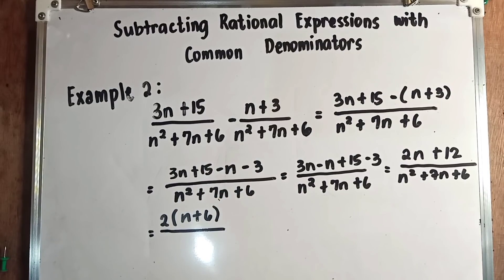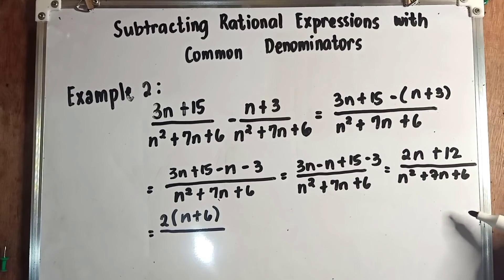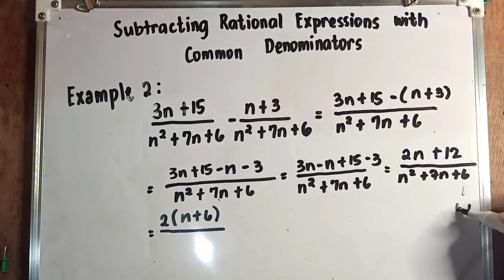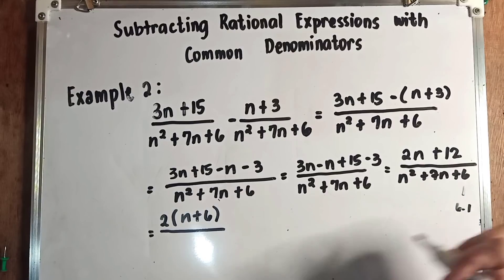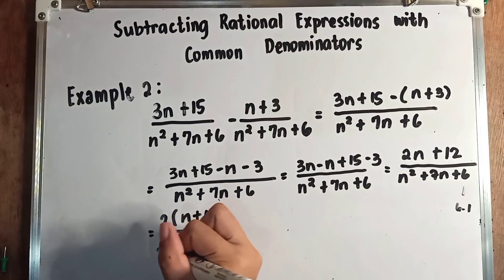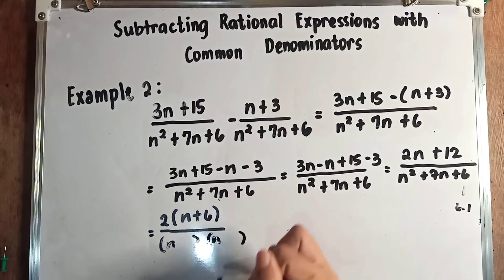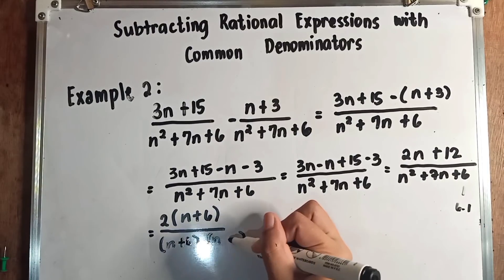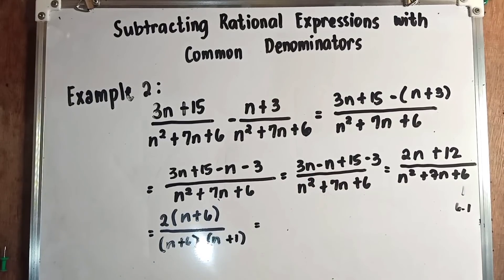For n squared plus 7n plus 6, it is a general trinomial. We find factors of 6 that add up to 7: 6 times 1 equals 6, and 6 plus 1 equals 7. Therefore the two numbers are 6 and 1. Factoring n squared gives n times n, and we place positive 6 and positive 1, giving (n plus 6) times (n plus 1).